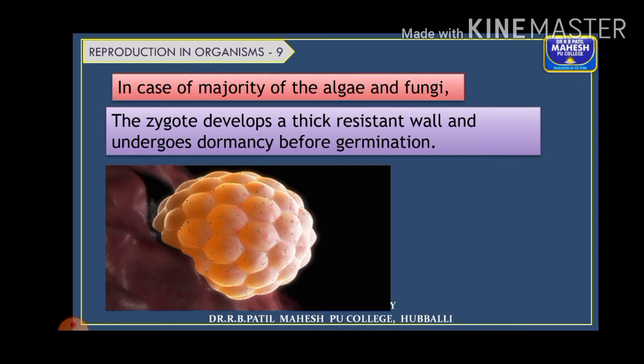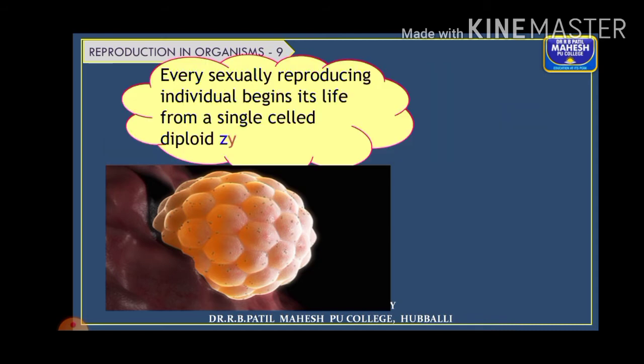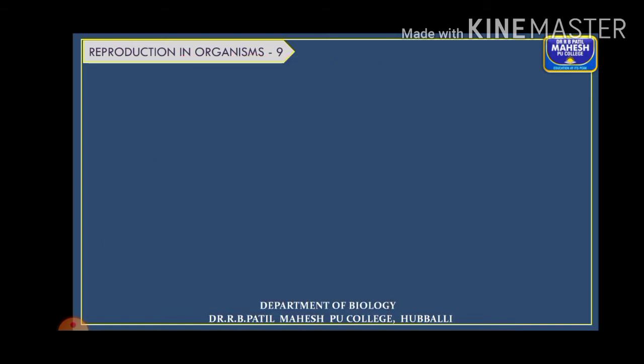In organisms such as higher animals showing a diplontic life cycle, the parents are diploid and also produce a diploid zygote, but that zygote divides by mitotic divisions. So in the diplontic life cycle the zygote undergoes mitotic divisions, whereas in lower organisms with a haplontic life cycle the zygote divides by meiotic division. One universal thing is that every sexually reproducing organism begins its life with a single diploid zygote.